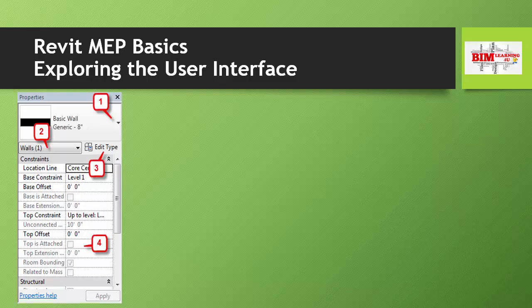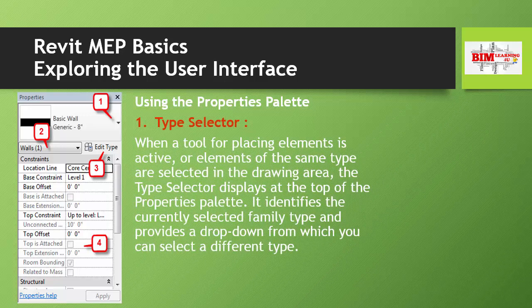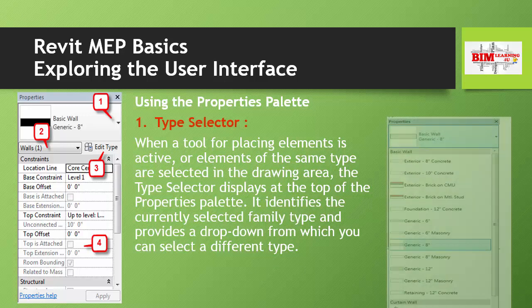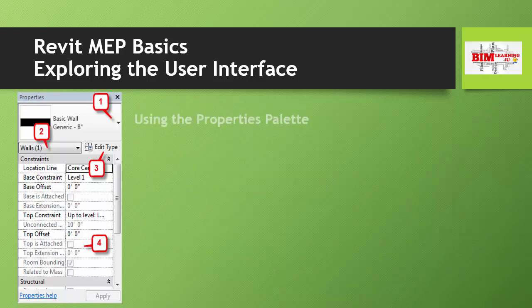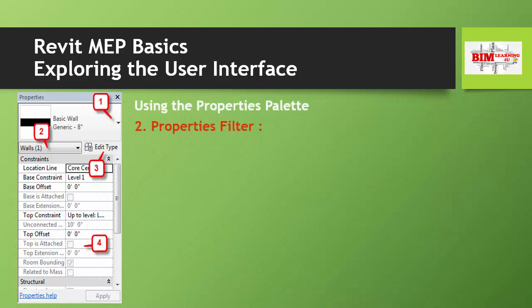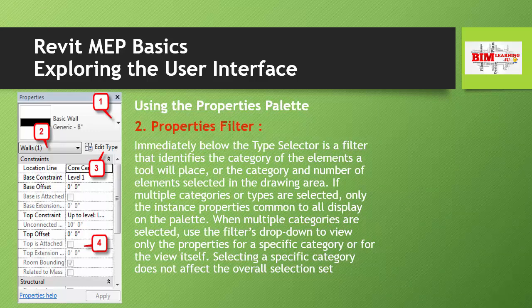Now let's discuss important things to know about the Properties tab. Point one — Type Selector: when a tool for placing elements is active or elements of the same type are selected in the drawing area, the Type Selector displays at the top of the Properties Palette. It identifies the currently selected family type and provides a drop-down from which you can select a different type.